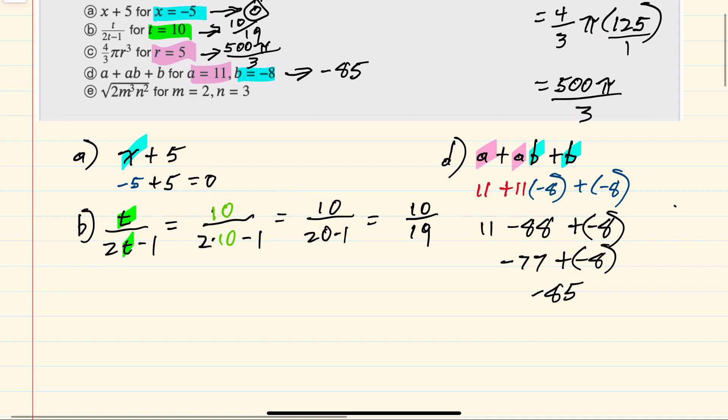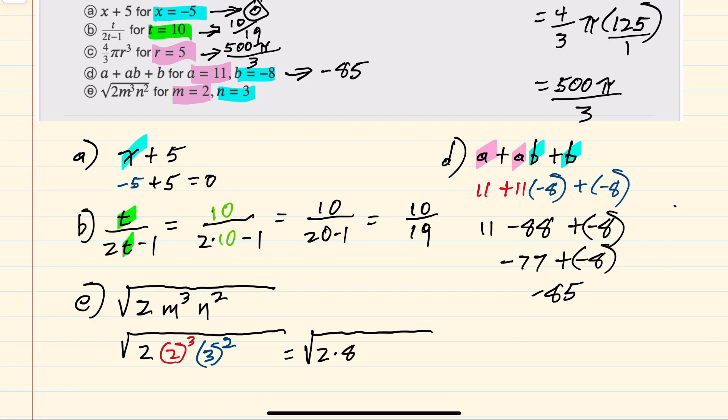And then lastly for e, we again have two variables here where m is 2 and n is 3. So that substitution has m as 2 cubed and then n as 3 squared. Evaluating all of the exponents first, I have 2 times 2 cubed is 8, and 3 squared is 9. So this would be the square root of 16 times 9. We can do the multiplication and then take the square root or take the square roots of each of those, since they are perfect squares, and then multiply to be 12.